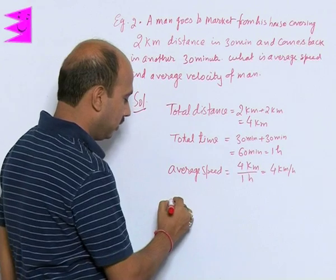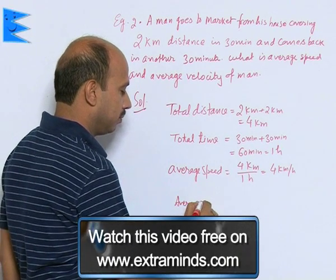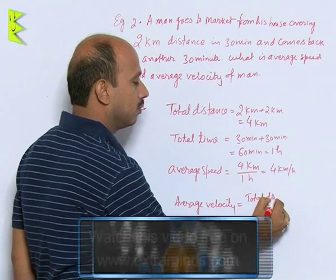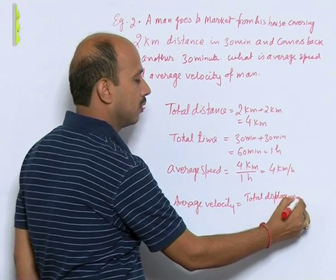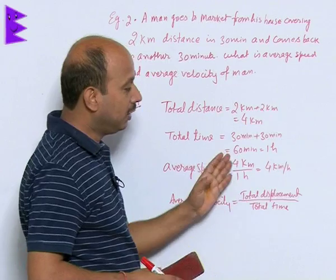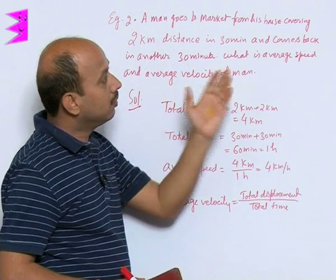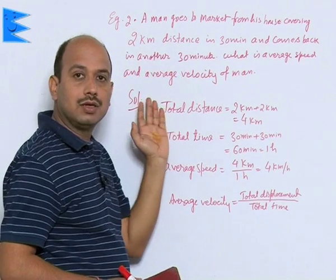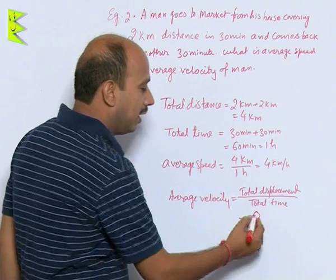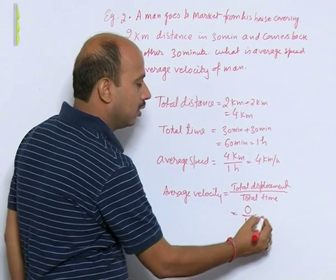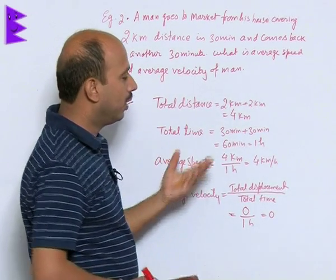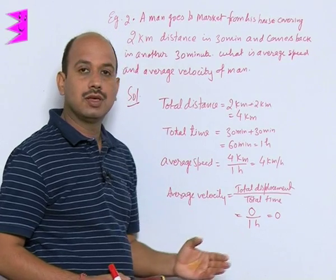Now we calculate average velocity, which equals total displacement divided by total time. Since the man went to market and came back, his initial and final positions are the same, so total displacement is 0. Therefore, average velocity equals 0 divided by 1 hour, which equals 0. This is an example where average speed is non-zero but average velocity is 0.